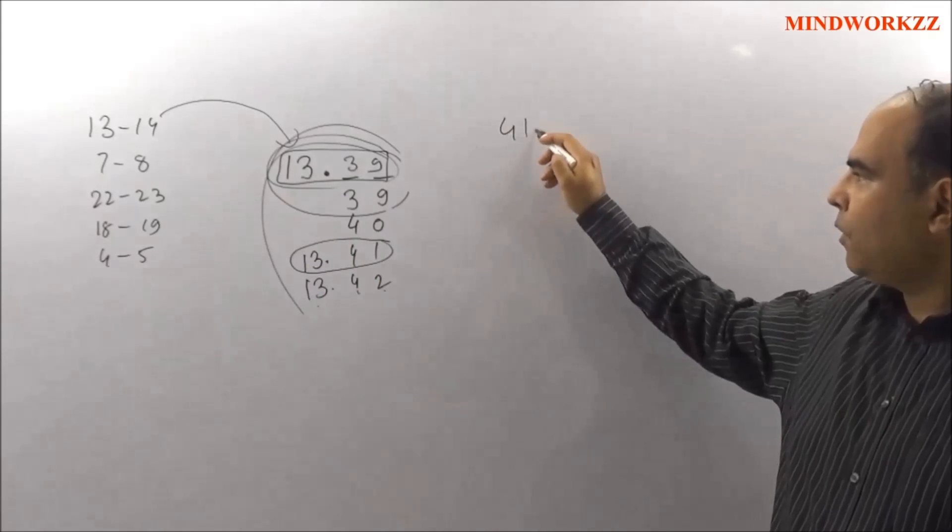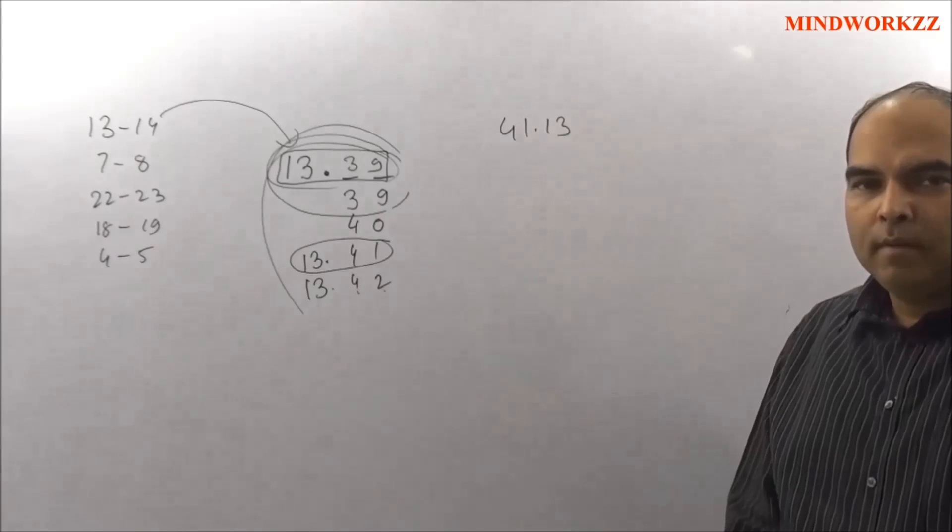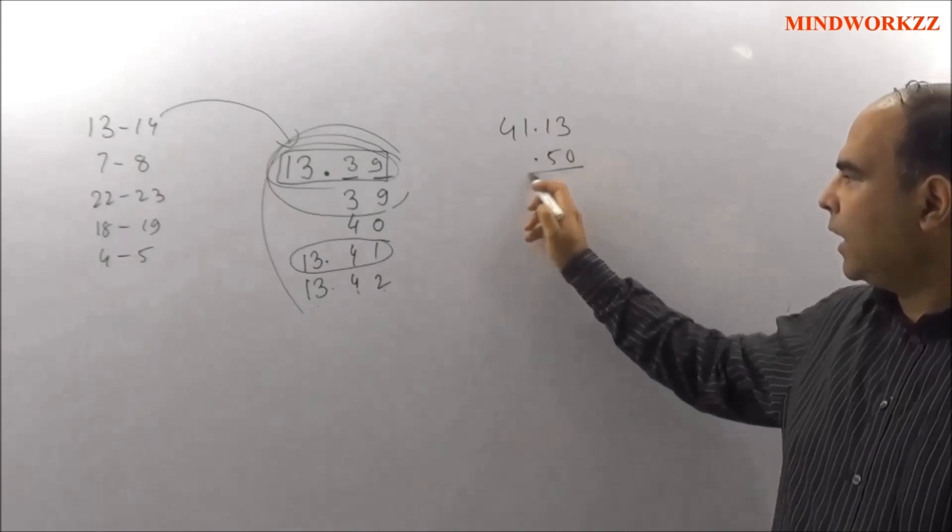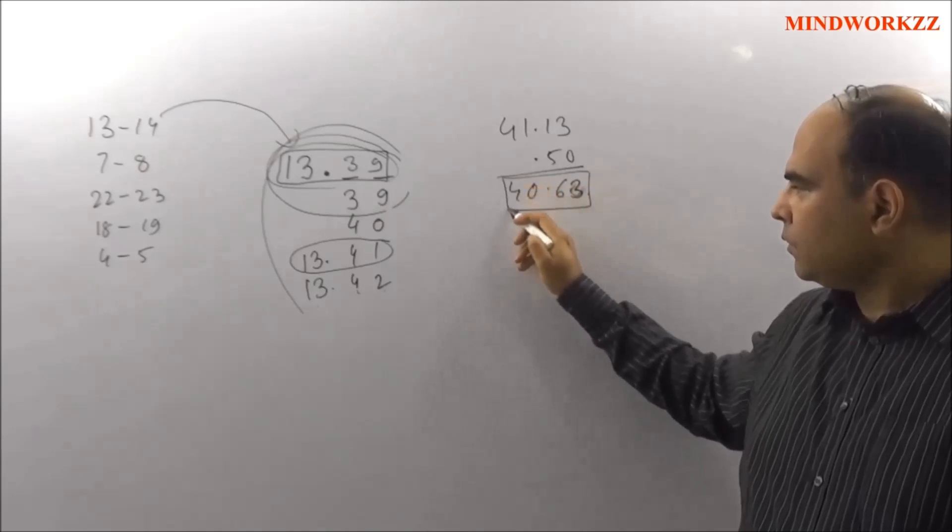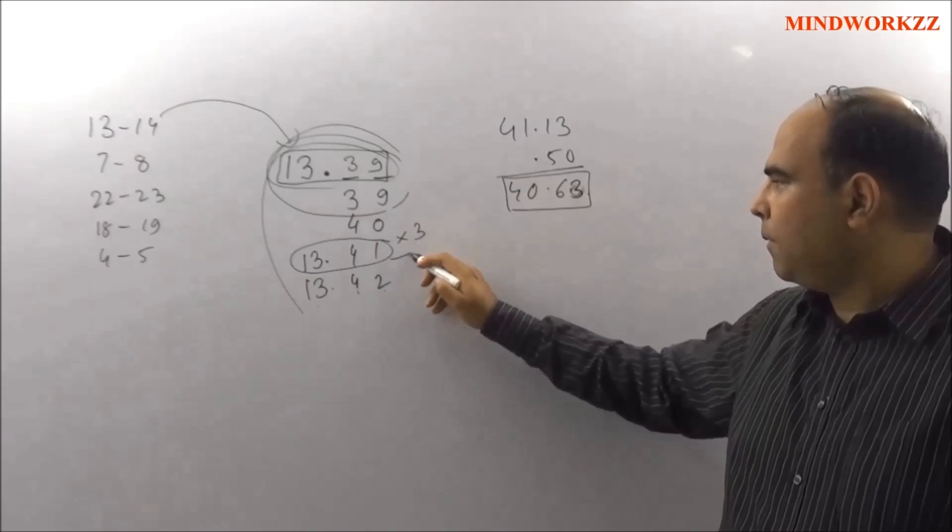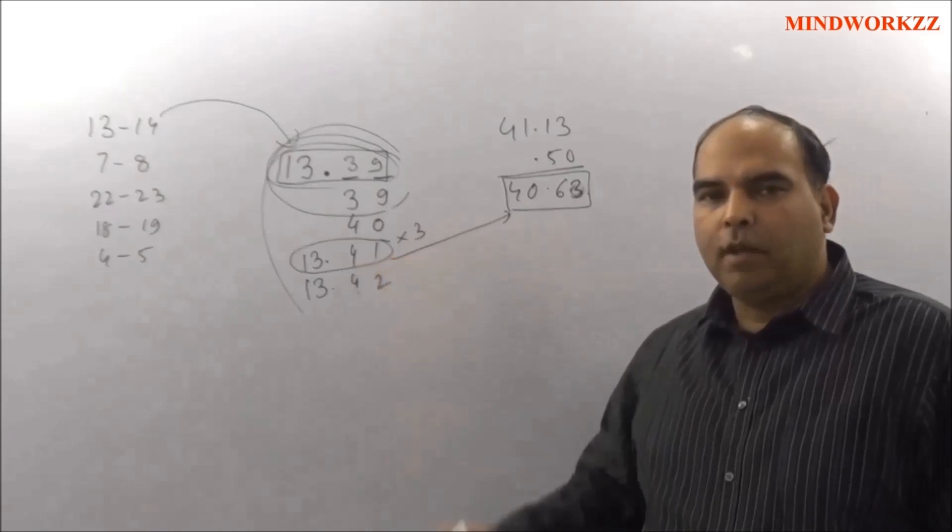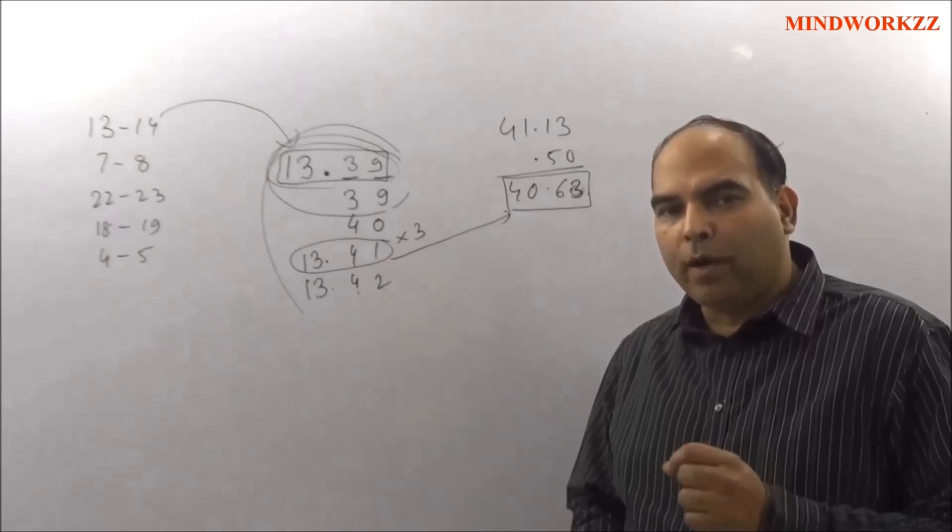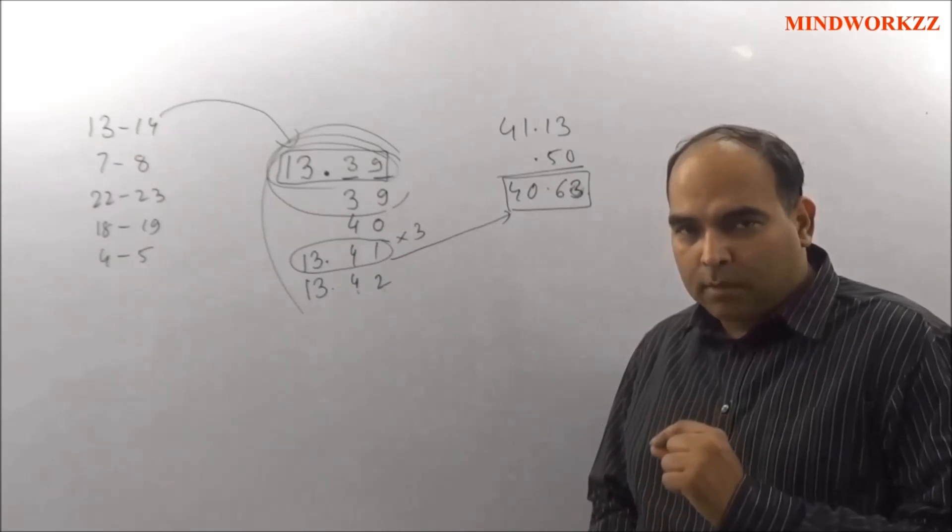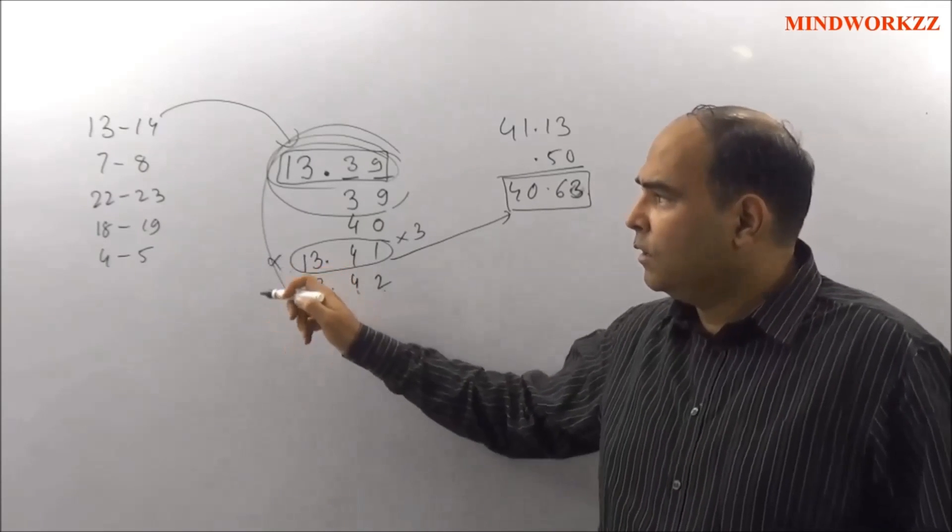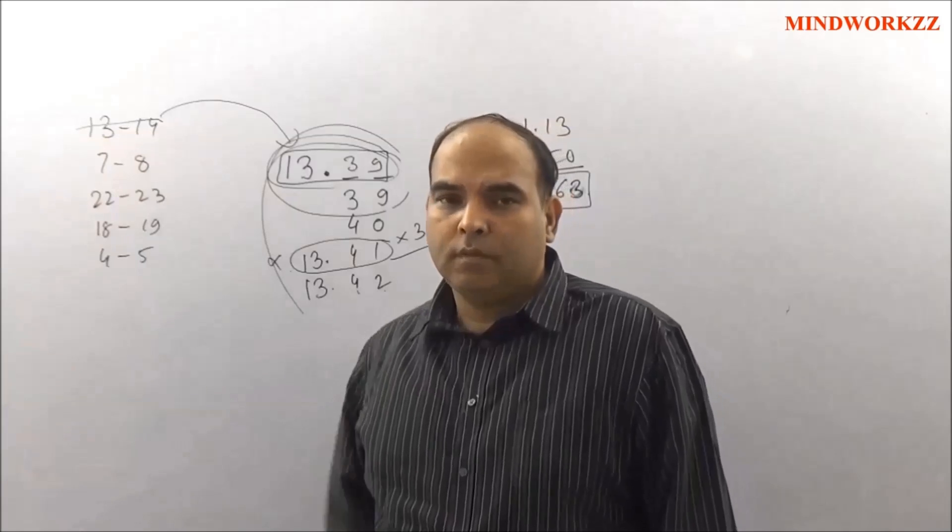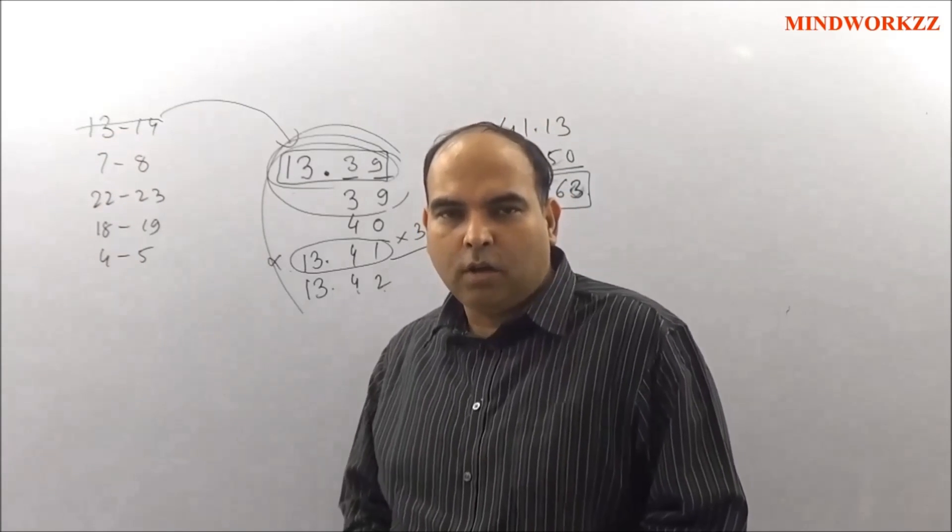So 13.41 is the value I need to check, the others do not have a unit digit match. So 13.41 becomes 41.13. If I subtract 50 paise, I get 40.63. And I can realize that this value is not triple of this because triple of 13.41 is 40.23. So you're close to the answer, but this is not the answer. And the moment you reject 13.41, you reject this option. So the option 13 to 14 is gone, it won't work.